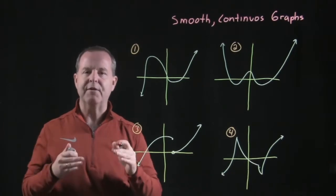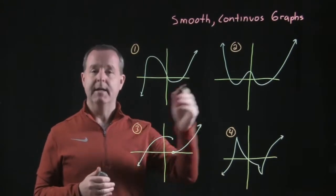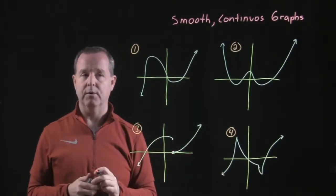Smooth means that there's no rough edges or no points. And continuous means that there's no gaps as we go left or right in these polynomial functions.